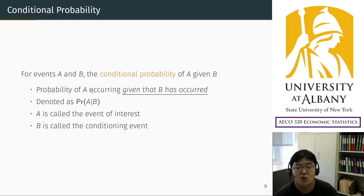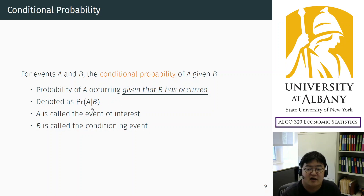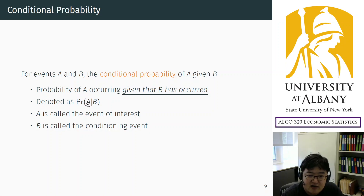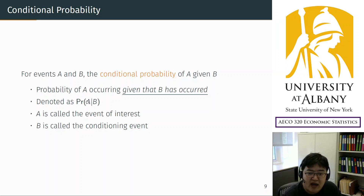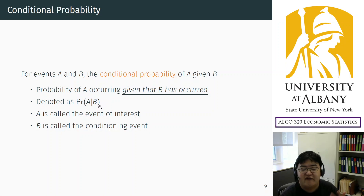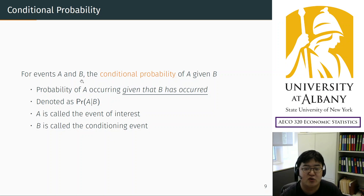Anyhow, this is the conditional probability notation. Note that the order is important — it's A first, the main event first, and then condition later. A bar B is different from B bar A. If you change the order, then the meaning is totally different.